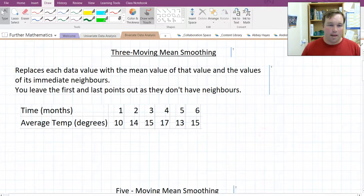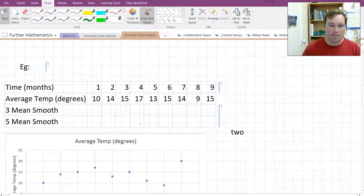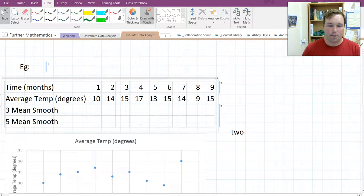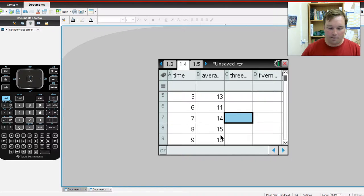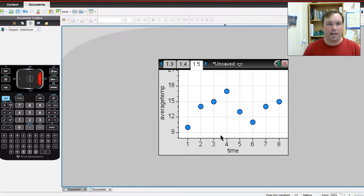Here we have a data set. This is the one we'll be using for today. I've just made it up. It is time in months and average temperature. If you put it in your calculator and draw a graph of it, it looks like that. So there is some noise. It goes up and down. We can't really see what exactly is happening. They're just examples to show you how to smooth out the data.